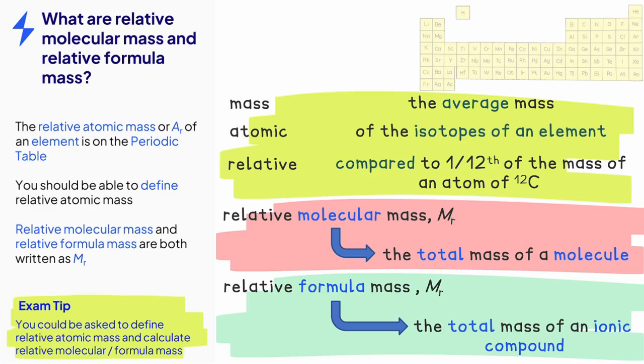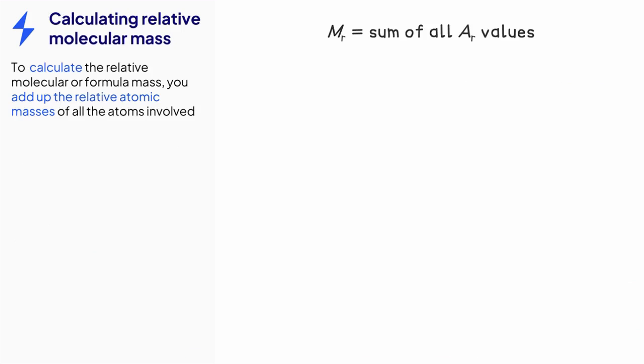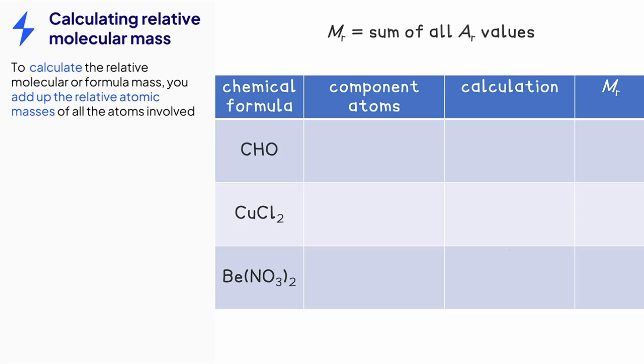The questions that you are usually asked about relative atomic mass are different to those about relative molecular or formula mass. The way to calculate relative molecular or formula mass is to add up all of the relative atomic masses of the elements in the chemical. We will use three compounds to show the process.